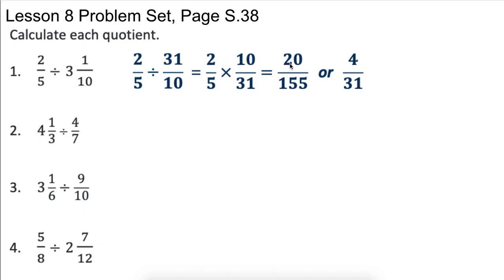Then we just multiply straight across. And we end up with twenty. Two times ten is twenty. Five times thirty-one is 155. You may have to do these calculations off the side. Then this will simplify. We can divide them both by five and simplify this down. It's always good practice to simplify these.